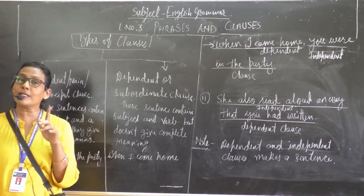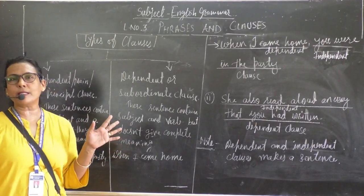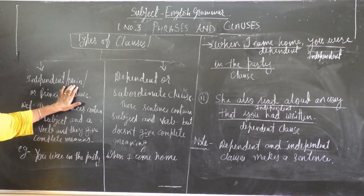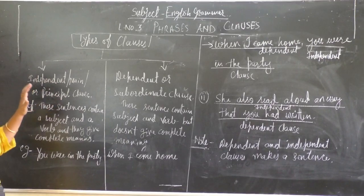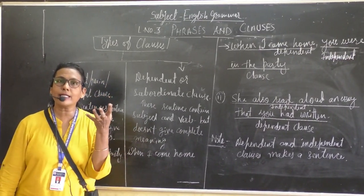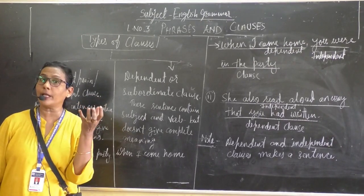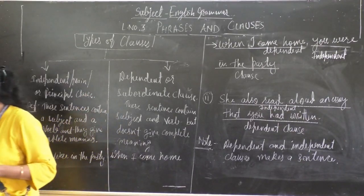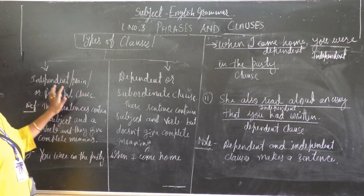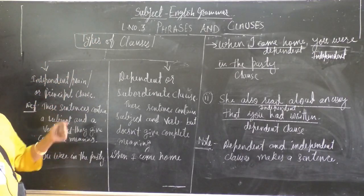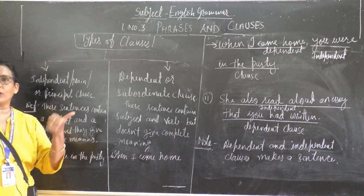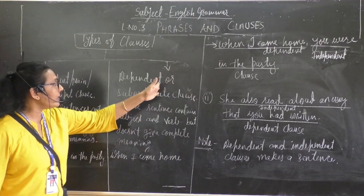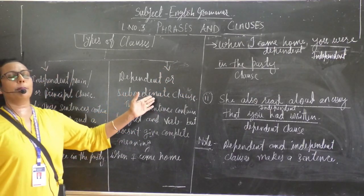What is principal? Principal means main — just like the principal of our school is the main person. So the principal clause, the main clause — that is why we call it the main clause, and it is independent. Just like India is an independent country — not depending on other countries. That is called independent. So the first type is the independent clause, or main clause, or principal clause. The second type is the dependent clause, also called the subordinate clause.